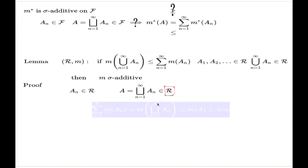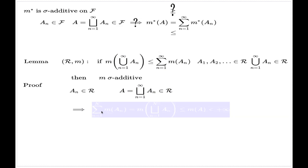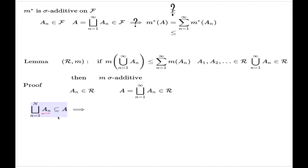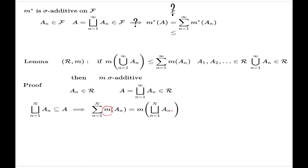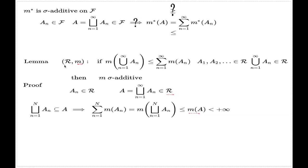Given this pairwise disjoint sequence whose union is in R, I can make the following observations. If I take the partial unions of the sequence {A_n}, these partial unions are subsets of A. Since m is a measure, the finite sum of individual measures equals the measure of the finite union. Then the measure of this finite union is less than or equal to m(A), because we have the subset relation and A belongs to R with m defined on R.